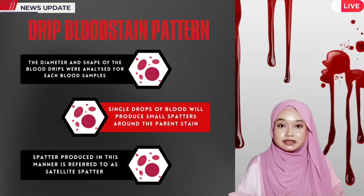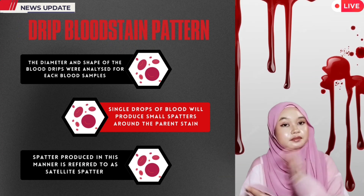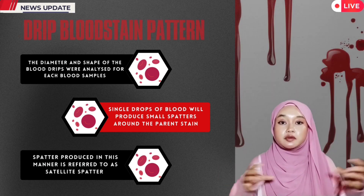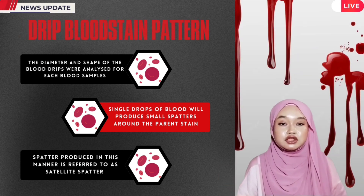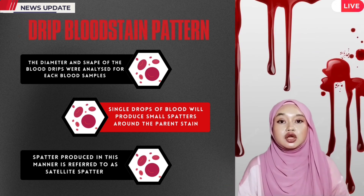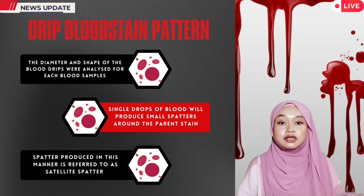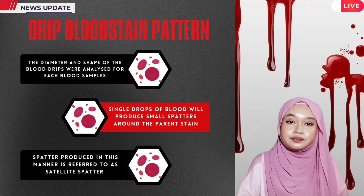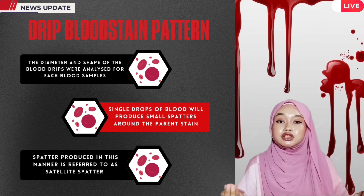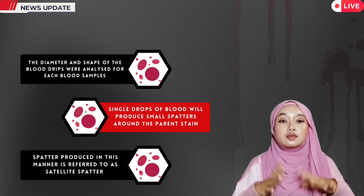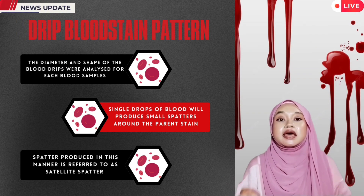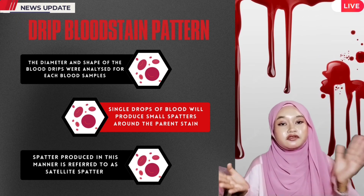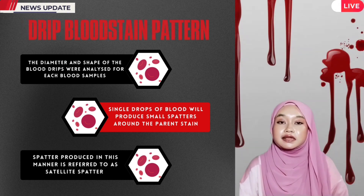The next criteria is the three bloodstain pattern characteristics, which were compared between the hemoglobin and blood replica samples. In order to find the perfect composition of blood replica similar to hemoglobin, three bloodstain patterns on different surfaces — especially the diameter and shape of the blood fluid — were analyzed for each sample. Single drops of blood will produce small spatters around the parent stain as a result of striking a rough surface, referred to as satellite spatter or satellite stain.